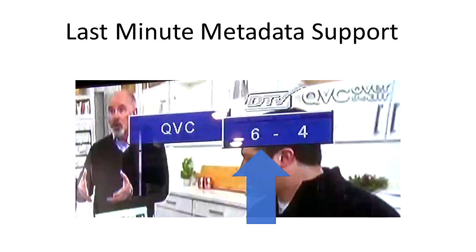Here is another interesting fact about the Panasonic set-top: in the channel banner it displayed the virtual channel number. Back in the pre-digital age, people knew channels by their number — for example, the broadcaster ABC might be channel 6, where channel 6 pertained to the analog broadcast channel in a particular viewing area. Going digital meant a different set of channel numbers was used.